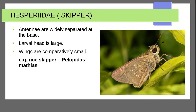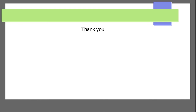Last family is Hesperiidae — skippers. Antennae are widely separated at the base. Larval head is larger. Wings are comparatively small. Example: rice skipper — Pelopidas mathias. This covers all Lepidoptera families — both butterfly families and moth families. Thank you.